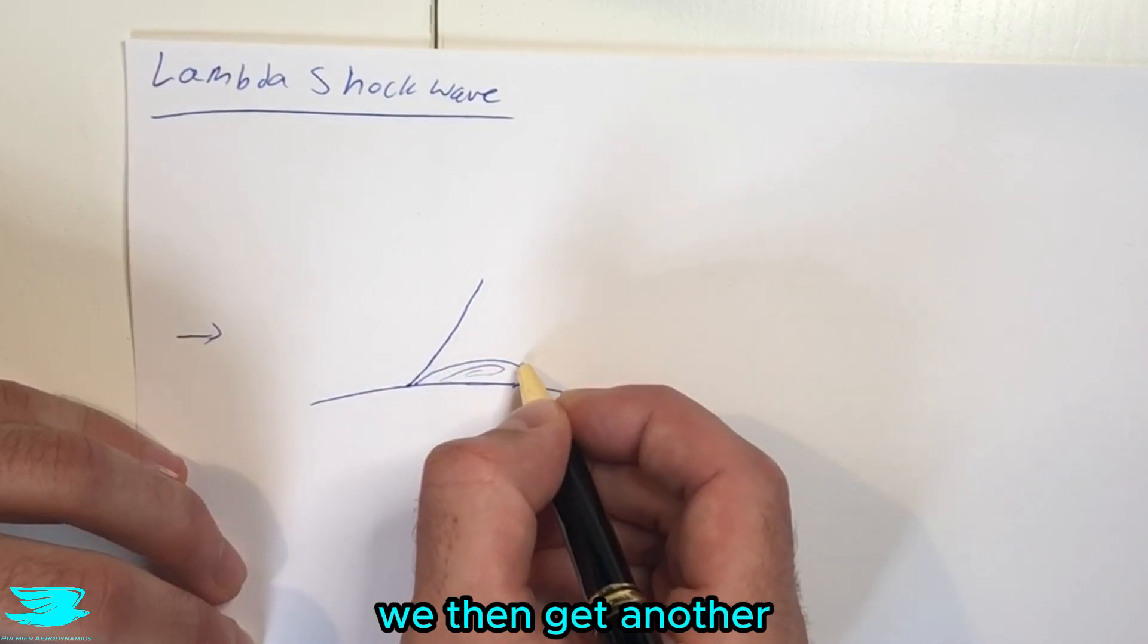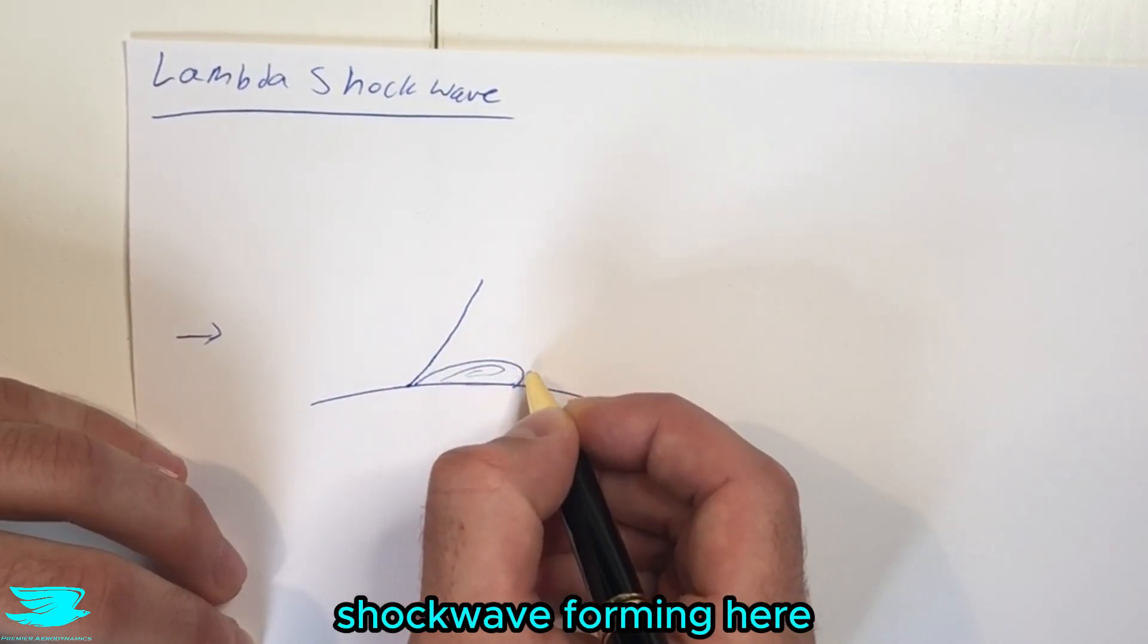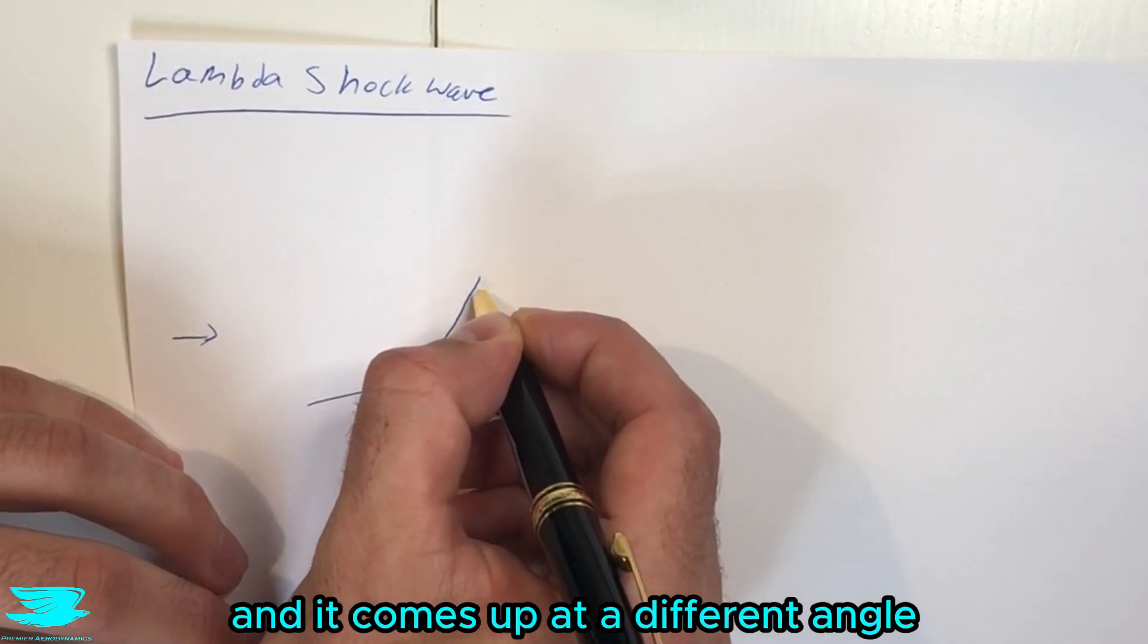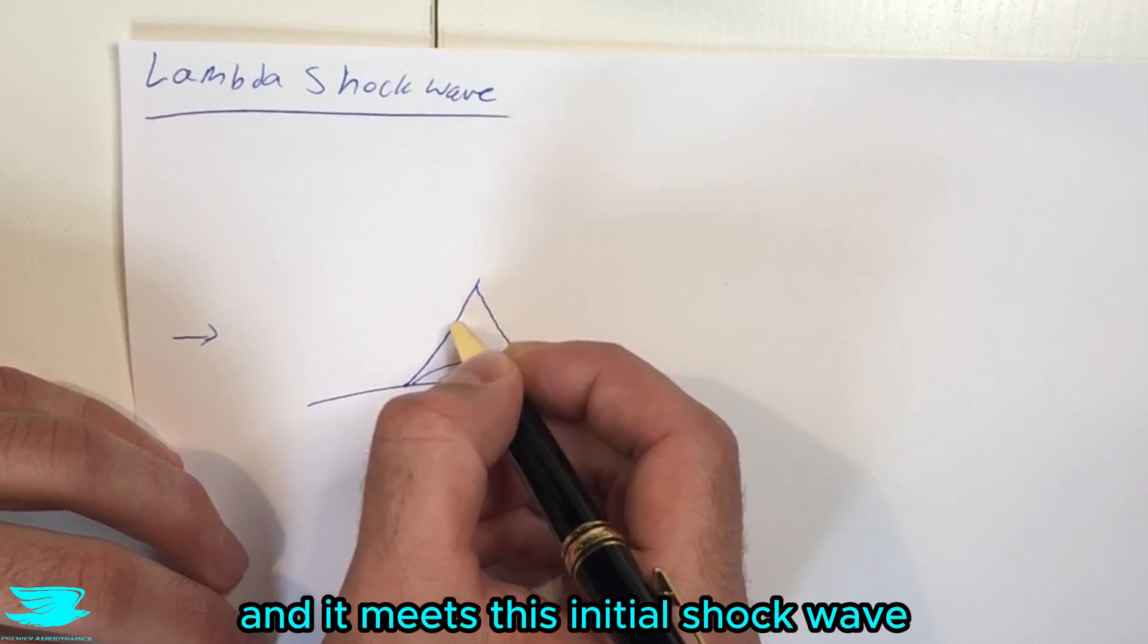And as the flow comes along, we then get another shockwave forming here as the streamlines start to expand. So we have another shockwave forming here, and it comes up at a different angle, and it meets this initial shockwave.